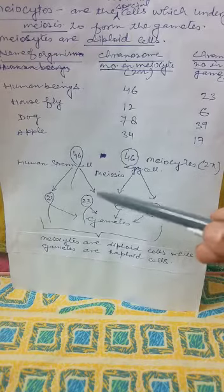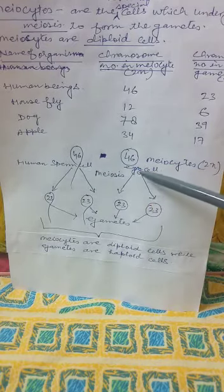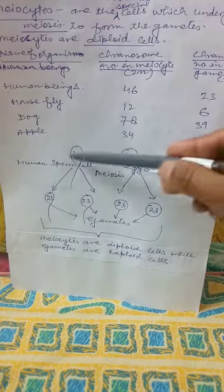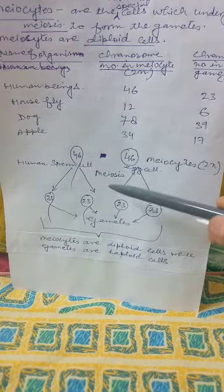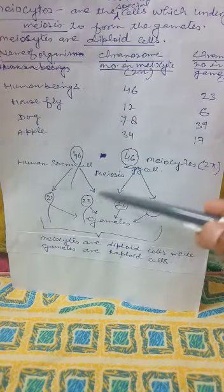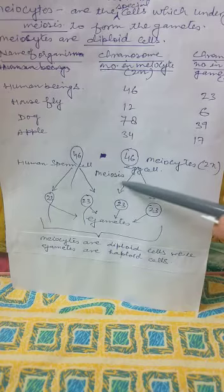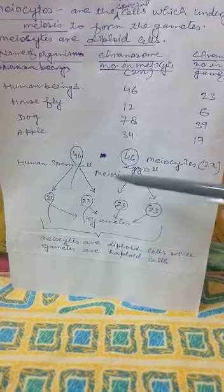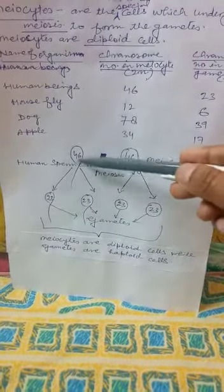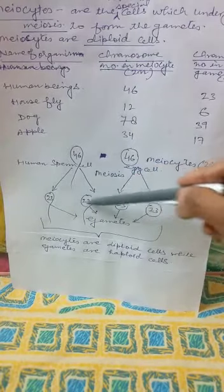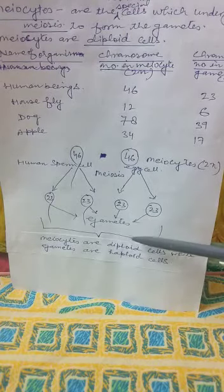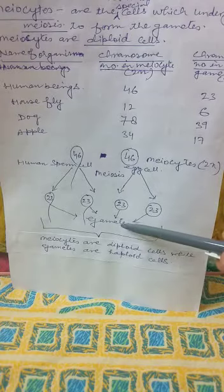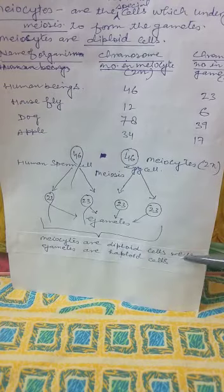This can be explained with the help of a diagram. The human sperm cell or egg cell are the meiocytes, which are diploid (2n). When they undergo meiosis, haploid gametes are produced. You can see that when meiosis occurs the cell divides and forms haploid gametes. Similarly, the egg also undergoes meiosis to produce haploid gametes. So gametes always have half the number of chromosomes of the meiocytes. Meiocytes are diploid cells while gametes are haploid cells. Thank you, this is all for today.